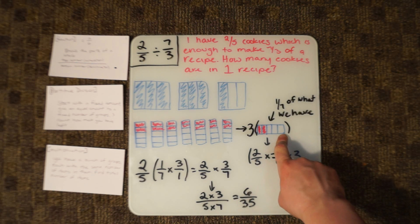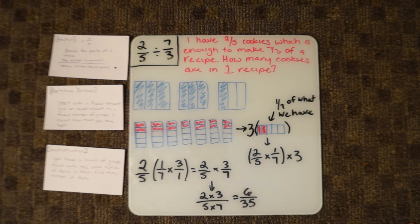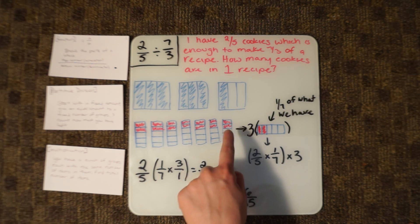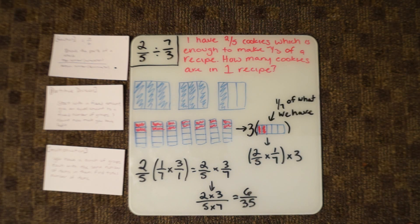This is one sliver of 7, because we have 1, 2, 3, 4, 5, 6, 7 slivers. And this is 1 of the 7.